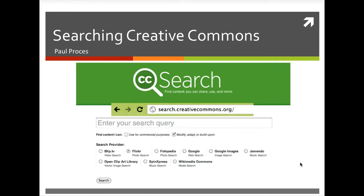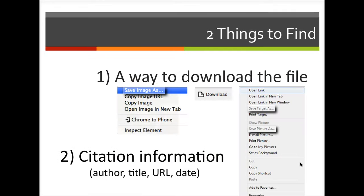I'm just going to show you Flickr today, but the process is basically the same for all of these. You want to find two things: a way to download the file you find and the information needed to cite it. Let's take a look at this in Flickr.